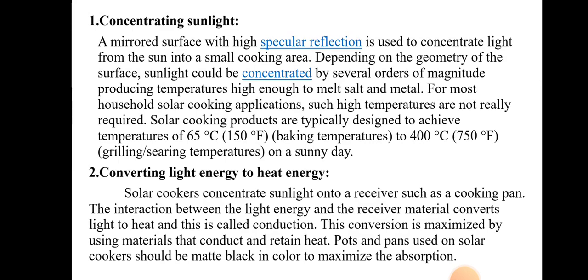Depending on the shape of the concentrating plate, there will be a different amount of sunlight concentrated. For most household solar cooking applications, such high temperatures are not really required. Solar cooking products are typically designed to achieve temperatures of 65°C (around 150°F) for baking, up to 400°C (750°F) for grilling or searing temperatures on a sunny day.